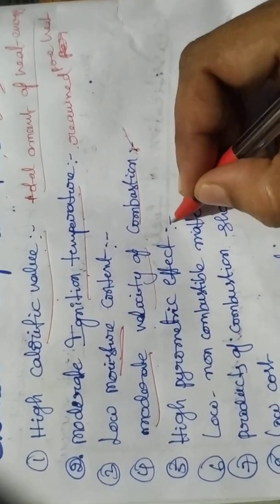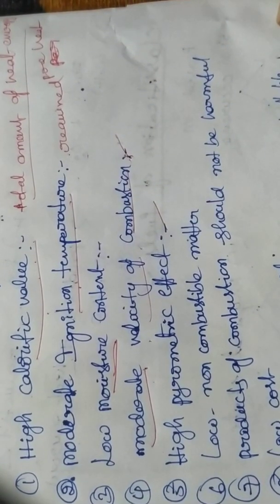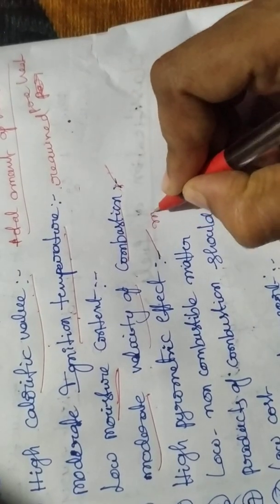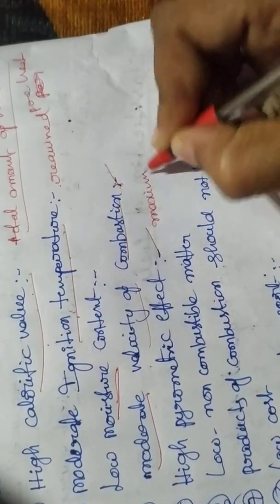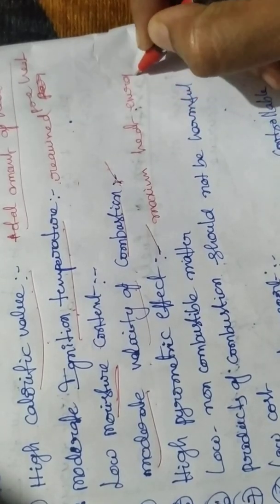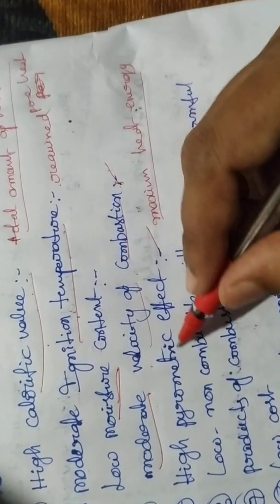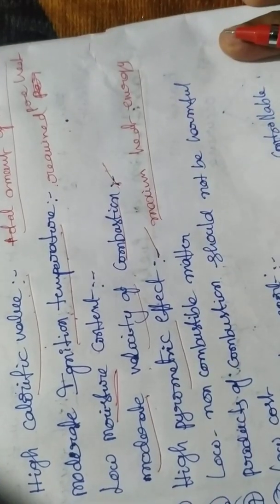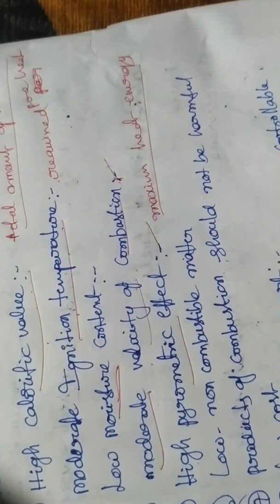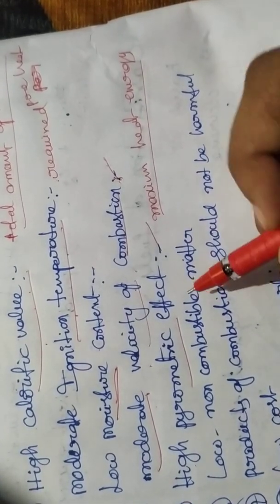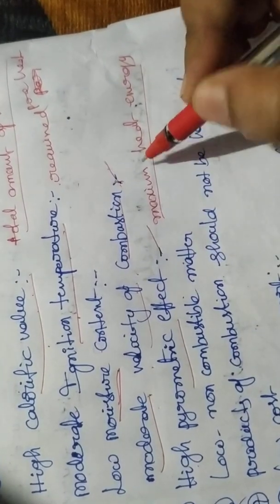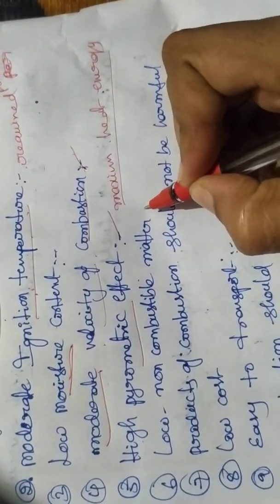The fourth characteristic is high pyrometric effect. Pyrometric effect means the maximum heat energy released when the fuel burns. Good fuel should have a high pyrometric effect.